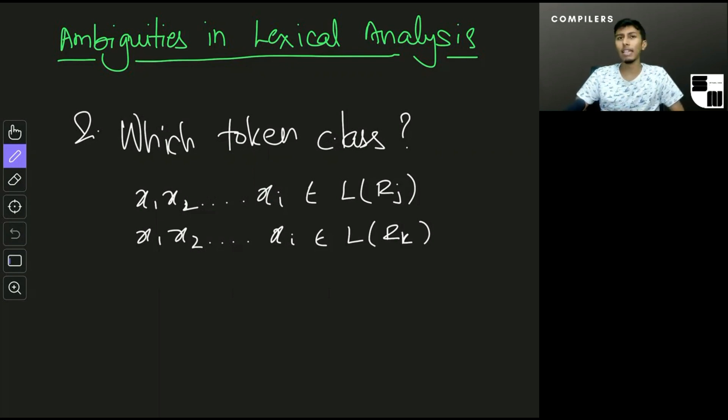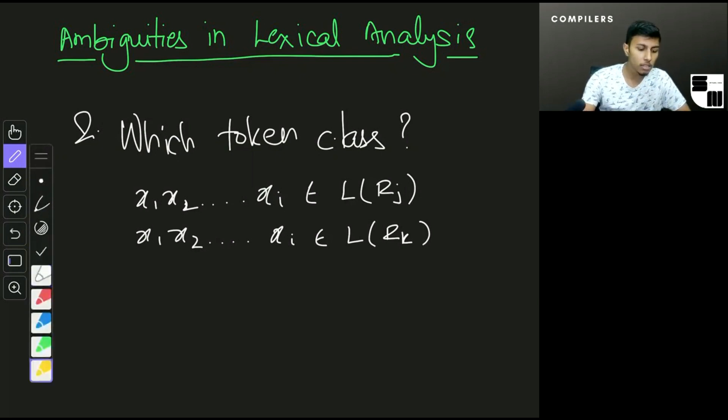And this is actually solved using a very simple technique nowadays. What we do is we define a priority order. In our priority order, whatever is at the top, it tries matching x1 x2 through xi with that. And if it does match, then it doesn't need to look anymore—this is the one that's going to be used. So the answer to this is just a priority order.